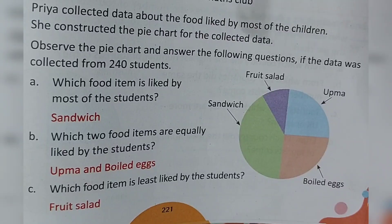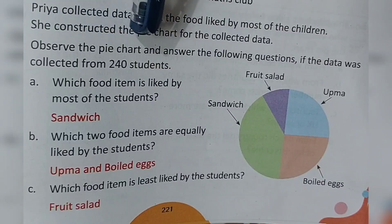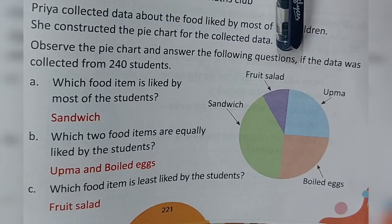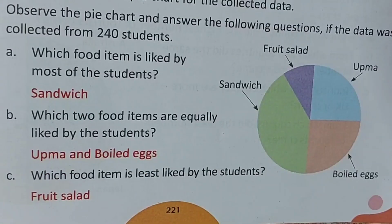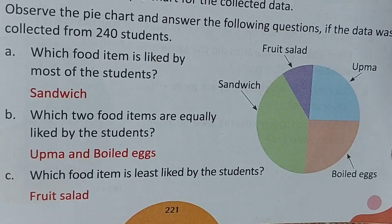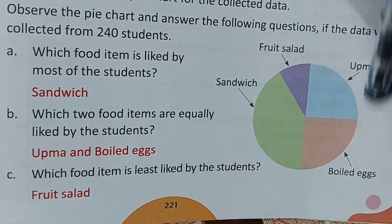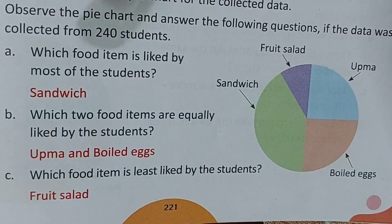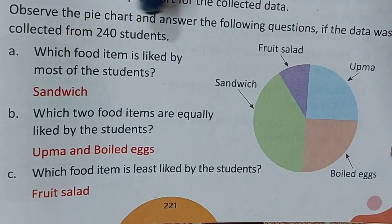Let us see the interpretation of a pie chart. Priya collected data about the food liked by most of the children and constructed a pie chart for the collected data. Observe the pie chart and answer the following questions. The data was collected from 240 students. The collected data are represented as a pie chart here.